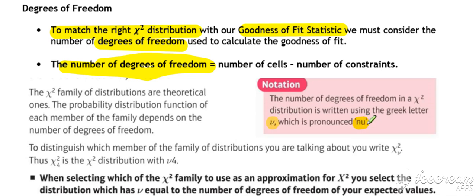It's like a V, but pronounced as nu. Now, the number of degrees of freedom is equal to the number of cells take away the number of constraints. Let me just explain that idea in a little bit more detail.